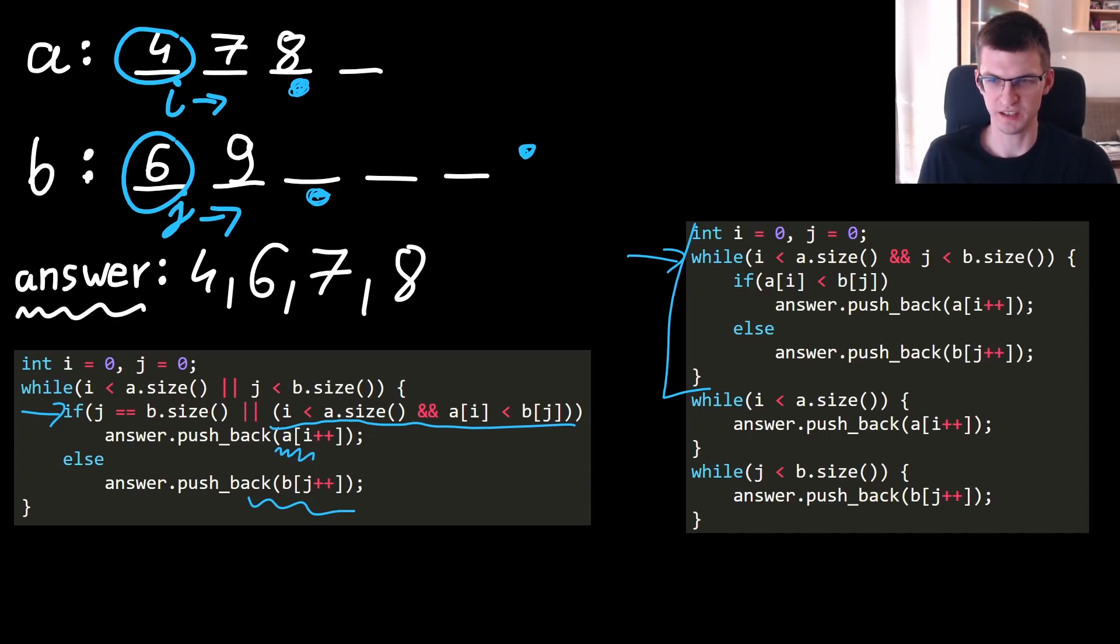While i is smaller than a.size, take all remaining elements of array a and the same with b. Exactly one of those two parts will happen, but still I need to implement both. I prefer the left version because it's shorter, but it isn't necessarily better for the problem about merging two sorted lists.